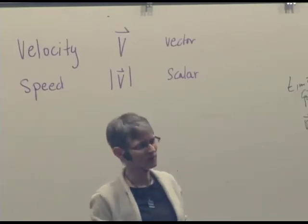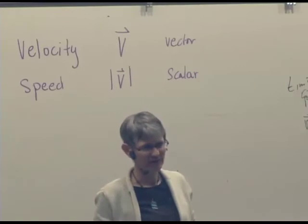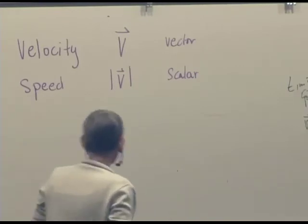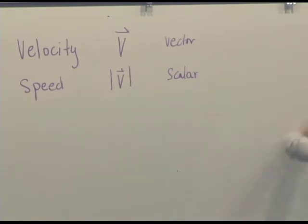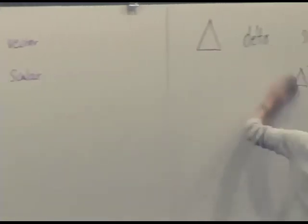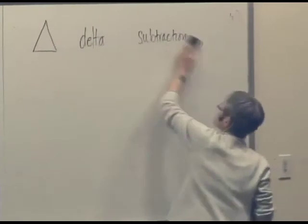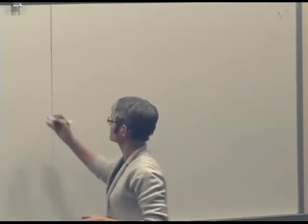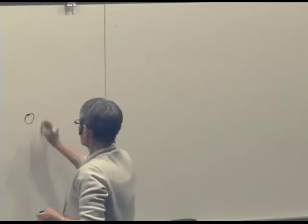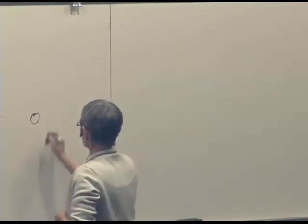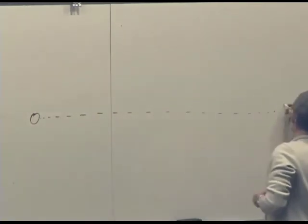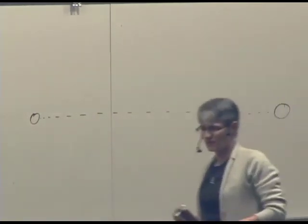Now velocity can be incredibly boring if it's constant. So if we had an object that started at this location here and it moved in a straight line, the constant speed to this location here.